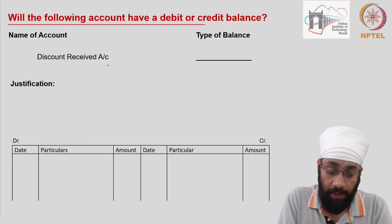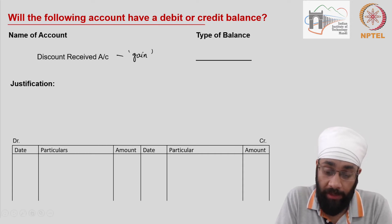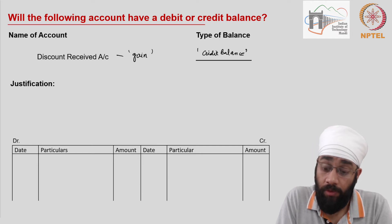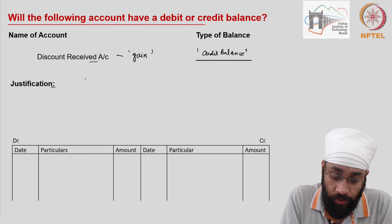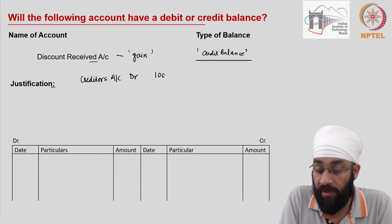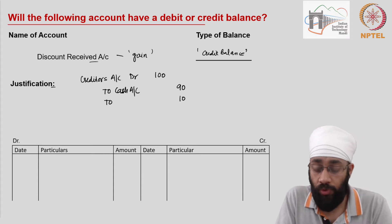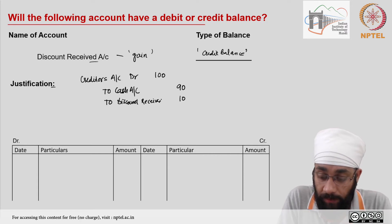The next item is the discount received account. Discount received is a gain, and you realize this gain when you pay a vendor for purchases. All incomes and gains have a credit balance. The justification: you receive a discount when you pay the vendor. The journal entry is creditors account debit — let's say you owed the creditor 100 — cash account credit 90, because the creditor offers a 10% discount if you pay right away.